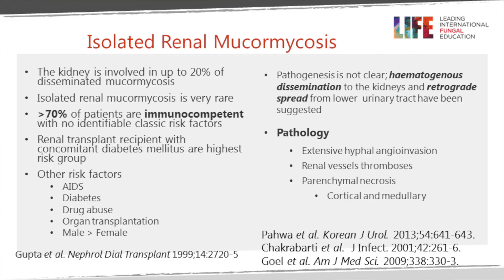Described primarily in India, renal mucormycosis can be part of disseminated disease or more commonly isolated to the kidney. Patients are typically apparently immunocompetent, though sometimes diabetic or post-renal transplant, more common in men in the prime of life. The pathogenesis is unclear - likely hematogenous spread - with extensive hyphal angioinvasion, renal vessel thrombosis, and parenchymal necrosis. The kidney usually needs to be removed.